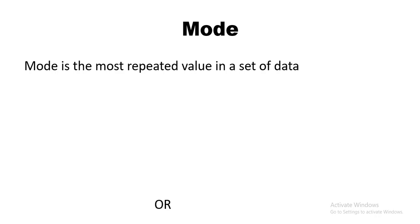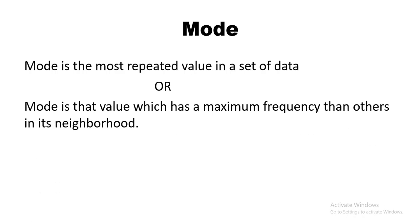A mode is the value which has a maximum frequency than others in its neighborhood. There are two cases. In case one, for random observations, any value which is repeated the most will be the mode. For simple frequency distribution, the observation whose frequency is the highest is the mode.